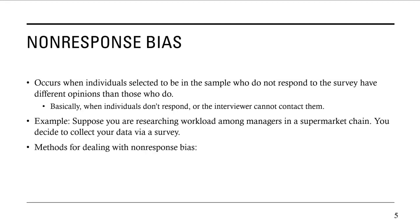Methods for dealing with non-response bias include doing callbacks — if you get people who don't respond, following up with them, calling them back, or now emailing or text messaging them back. Another way is using rewards or incentives. For example, Chick-fil-A, when they want you to fill out their surveys, will give you a free sandwich for doing it. That's an example of using a reward to get people to respond.